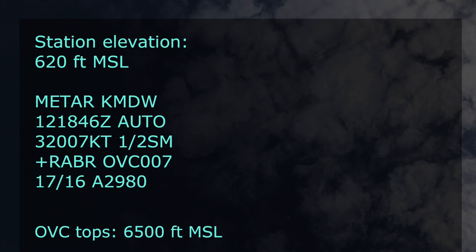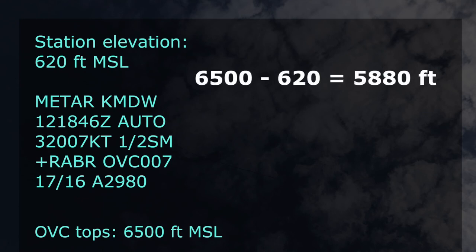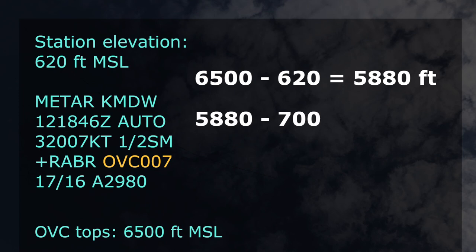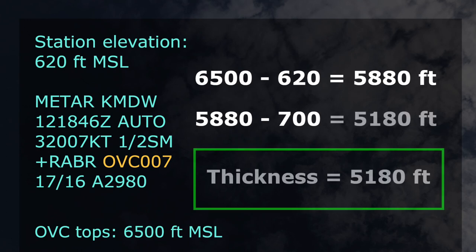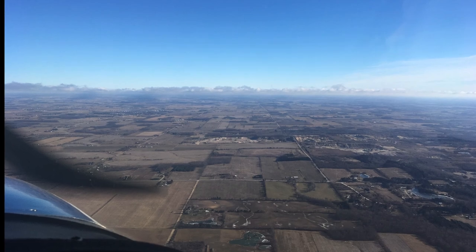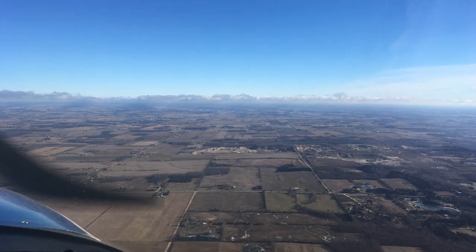Here we have our station elevation at 620 feet MSL. Subtracting this from the overcast cloud top height of 6,500 feet MSL gives us our cloud top height at 5,880 feet AGL. Looking at the METAR next, we find the overcast base height is at 700 feet AGL. Subtracting that 700-foot AGL base height from the tops of 5,880 feet gives us a result of 5,180 feet for our cloud layer thickness.